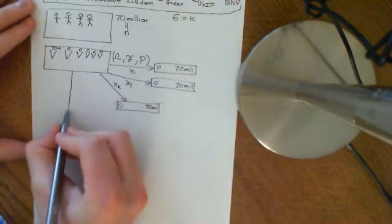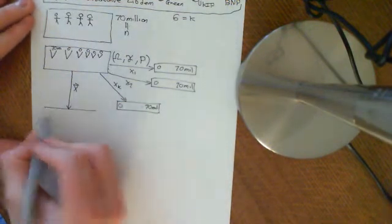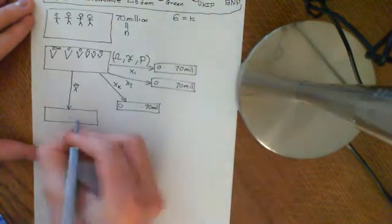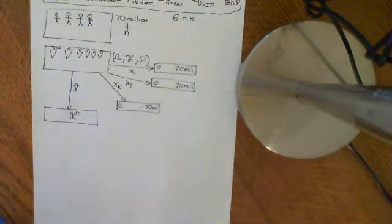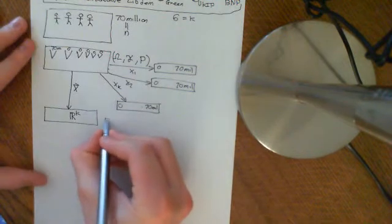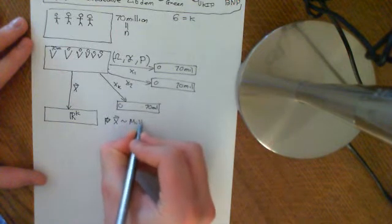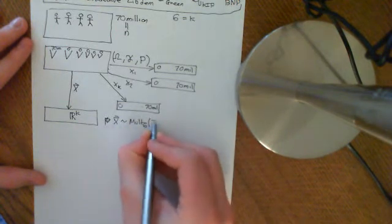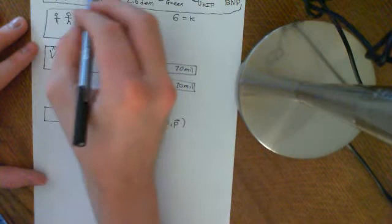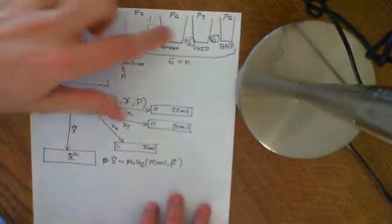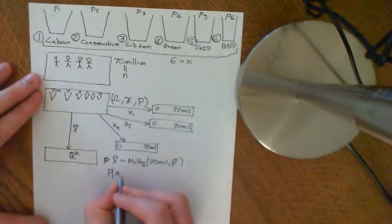And you'll have a joint random variable here, which we'll call the vector big X, which ascribes to each outcome a k-vector — a vector in R^k, so in this case R^6, but we'll keep it general. You can work out the probability mass function for this. The vector will be distributed multinomially with k equal to 6, n equal to 70 million, and then a probability vector P — which is P1, P2, P3, P4, P5, P6.